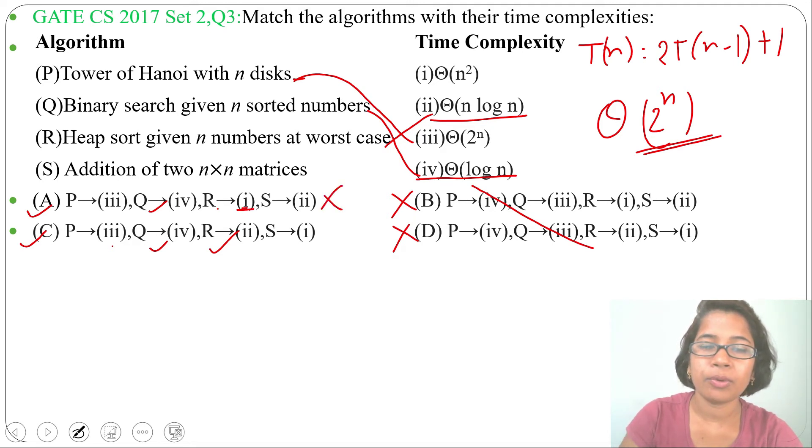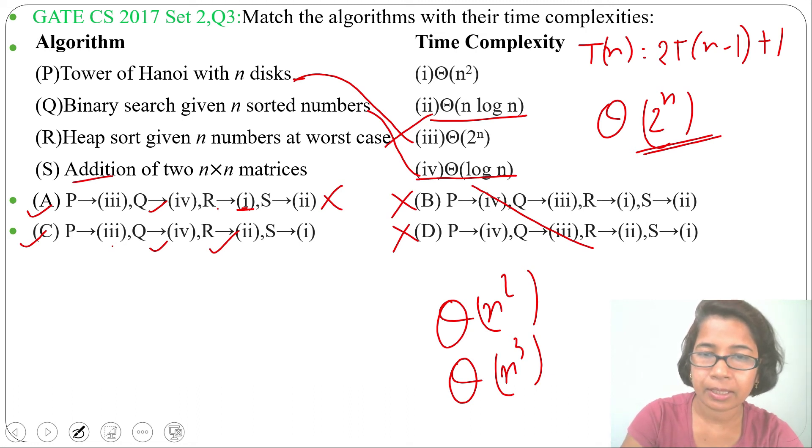S: Addition of two n×n matrices. For addition, running time is Θ(n²), and for multiplication, running time is Θ(n³). Here addition is given, so running time is Θ(n²), which is present in 1. So S is related with 1, and in option C, S is related with 1.